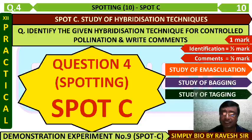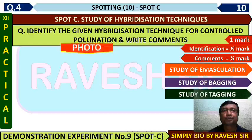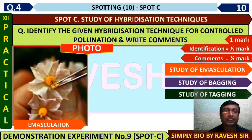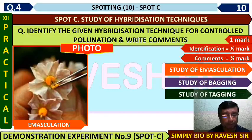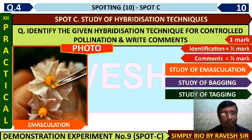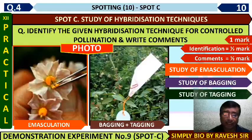This is the emasculation technique — the anthers or stamens of the bisexual flower are getting removed with the help of forceps. A picture will be given to you. Emasculation is the removal of the anther or stamen from a flower before maturity.